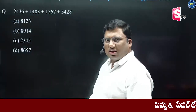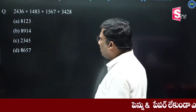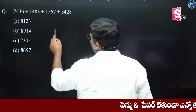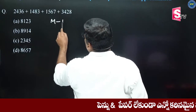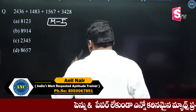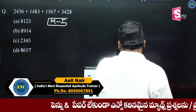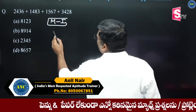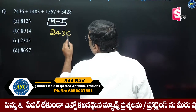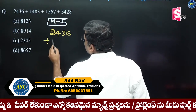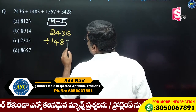Rightmost non-zero digit. Simple problem. This is 2436 plus 1483 — simplification is 2436 plus 1483.